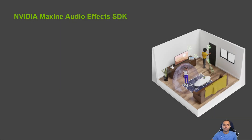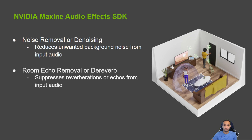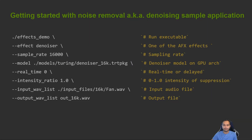NVIDIA Maxine Audio Effects SDK comes with the following effects: Noise Removal, also referred to as denoising, which reduces unwanted background noise from an input audio; Room Echo Removal, or de-reverb, which reduces reverberations or echoes from an input audio; and a combined Noise Removal and Room Echo Removal model that applies both effects in an optimized way.